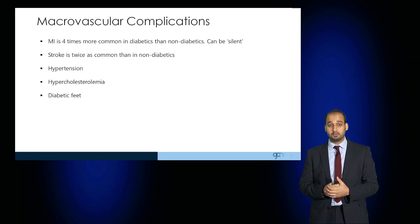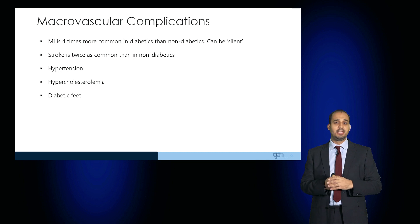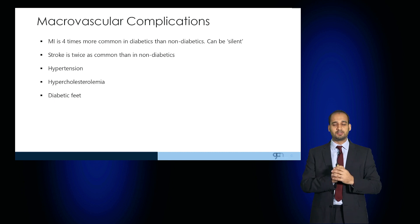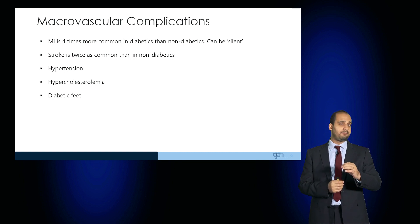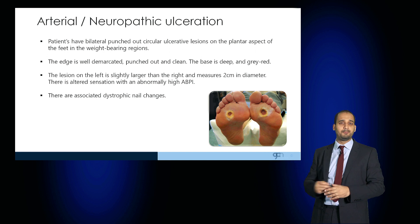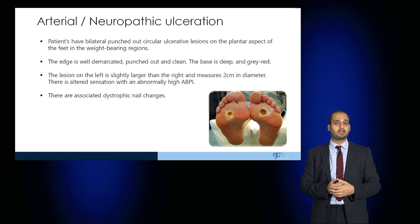Macrovascular complications include acute coronary syndrome, which is four times as common as in non-diabetic patients. If the nerves innervating the heart are damaged, this may impair nociception and the patient may suffer a silent MI. Stroke is more common in diabetics, as is hypertension, hypercholesterolemia, and diabetic feet, where the patient can develop bilateral arteriopathic ulceration.